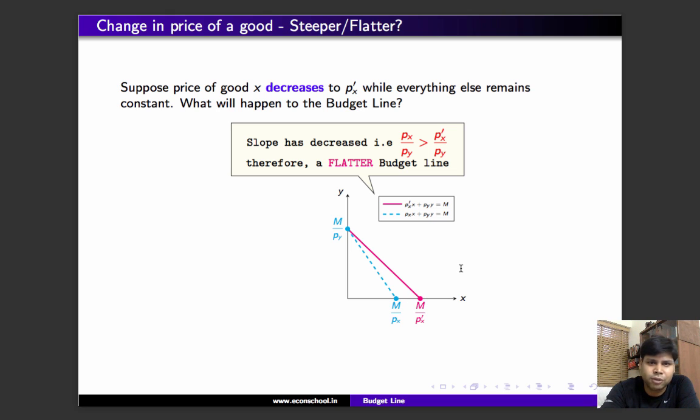This is the terminology I'll be using: whenever I say the budget line has become flatter, that means the slope of the budget line has fallen. Now, what happens if income increases?